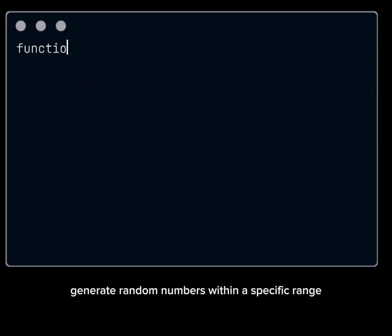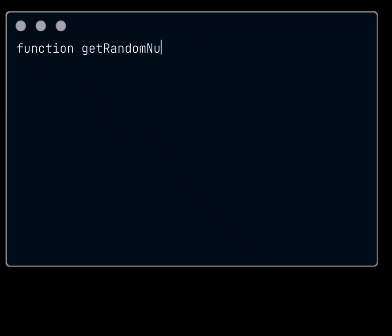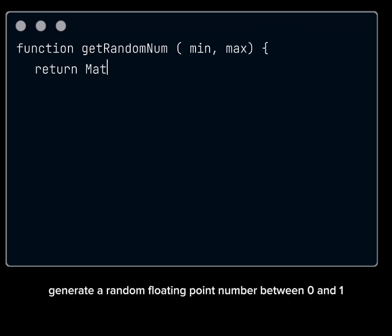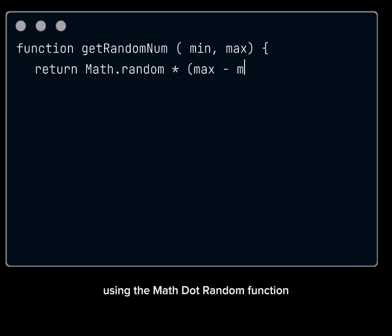Generate random numbers within a specific range. Declare a function giving it two parameters, min and max. Within the function, generate a random floating-point number between 0 and 1 using the Math.random function.